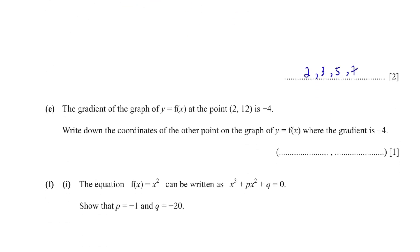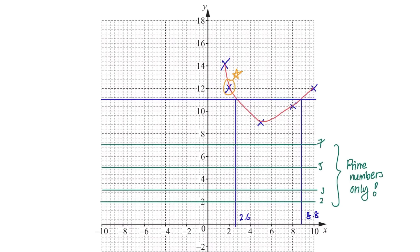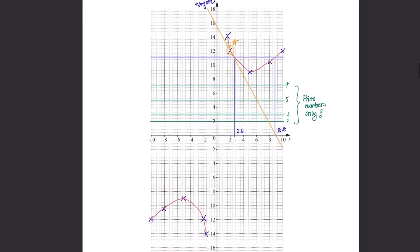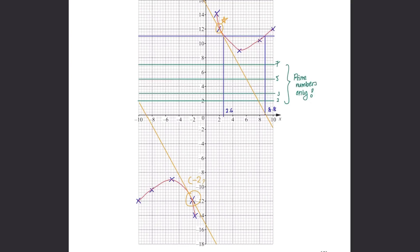Part E. The gradient of the graph of y equals to f(x) at the point 2, 12 is negative 4. Write down the coordinates of the other point on the graph of y equals to f(x) where the gradient is negative 4. The gradient of the graph at point 2, 12. How do you know if it's a curved line? You need to draw a tangent line to that point like this, only touching one point of the graph. They said the gradient is negative 4 and another tangent that can be drawn has the same gradient. It means that the other tangent will be parallel to this line. So where can another tangent be drawn on this curve? It's here at negative 2, negative 12.